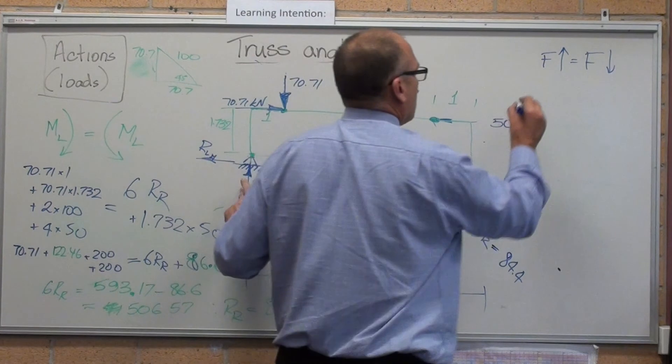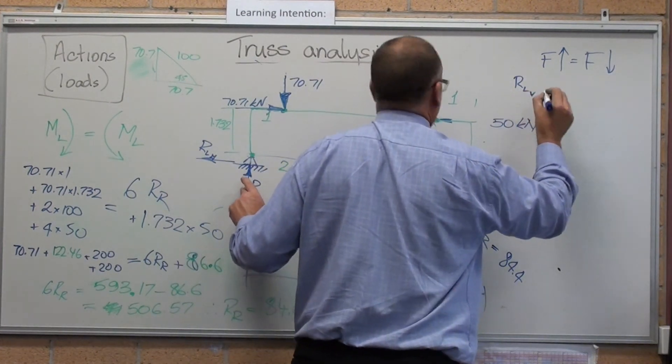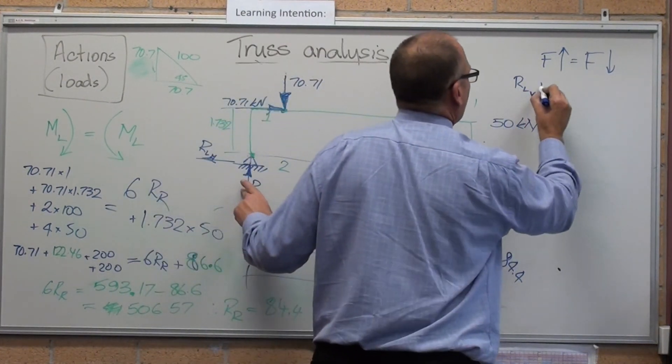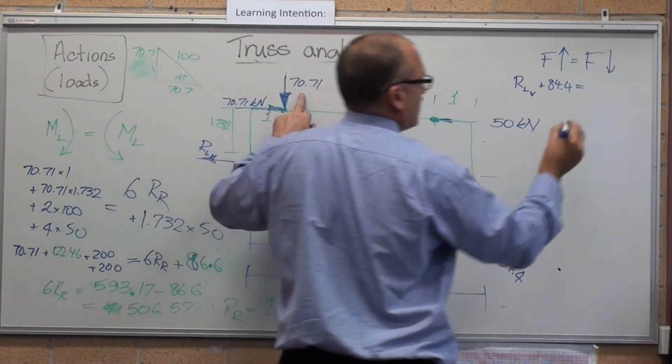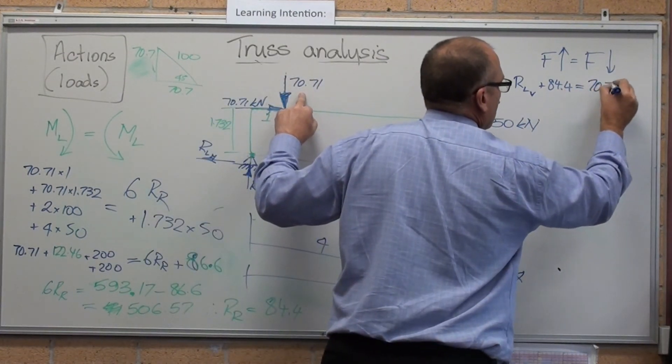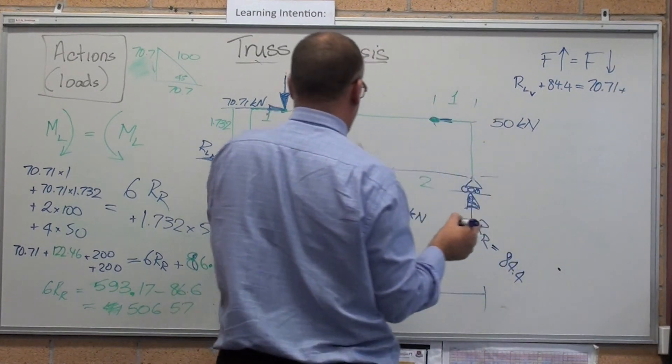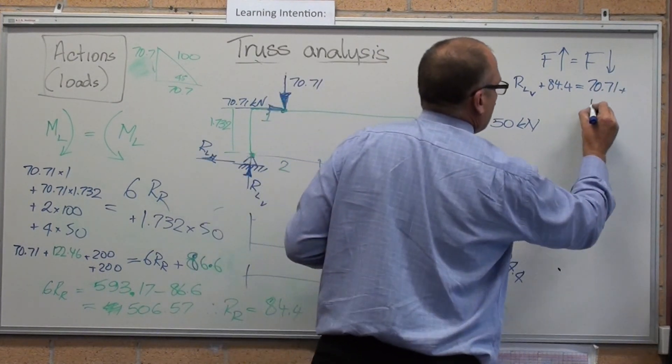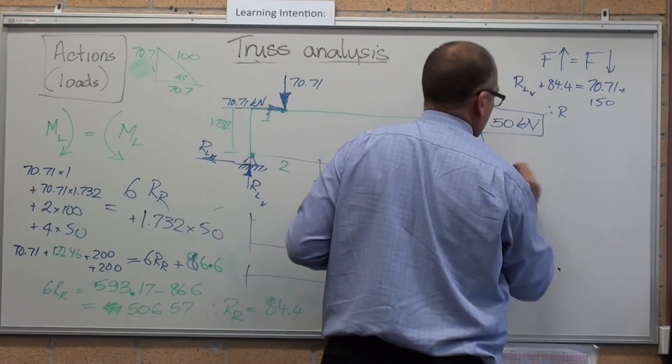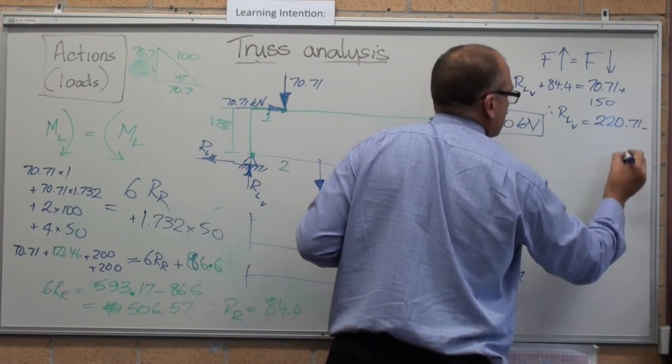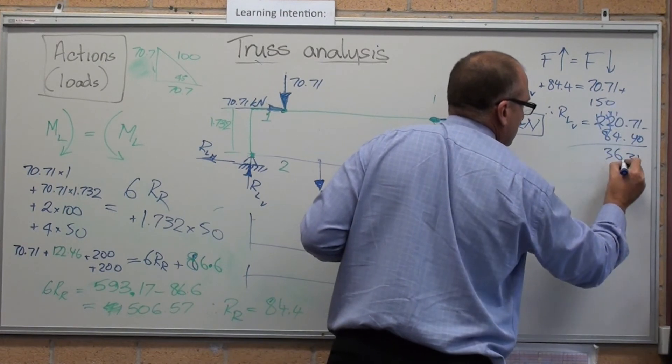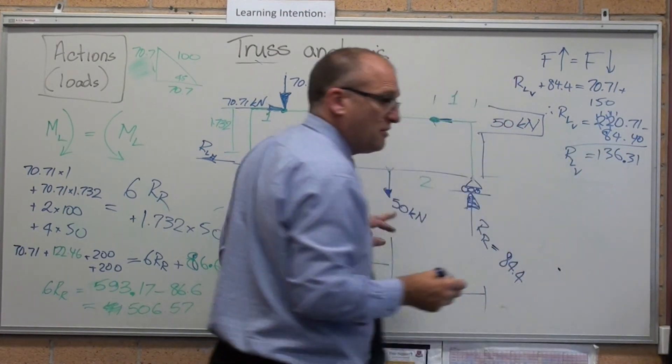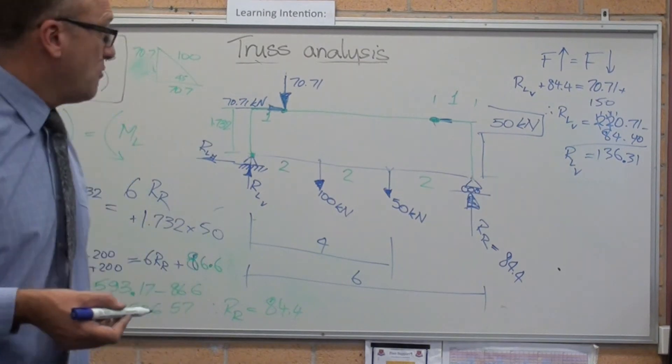Forces up is reaction left vertical plus 84.4 equals forces down 70.71 plus 150. Reaction left vertical is 136.3.